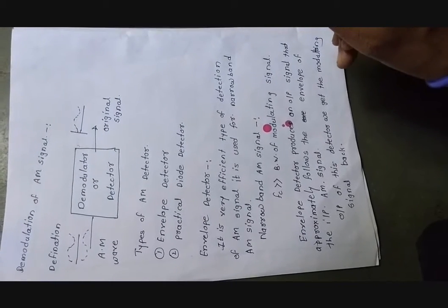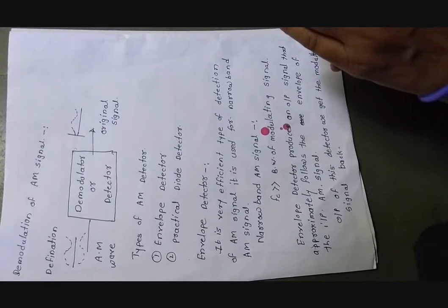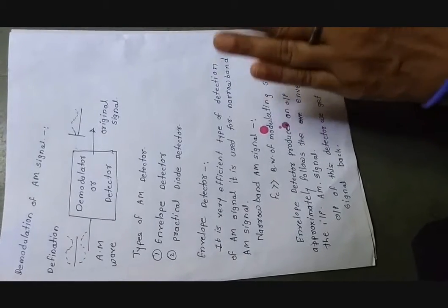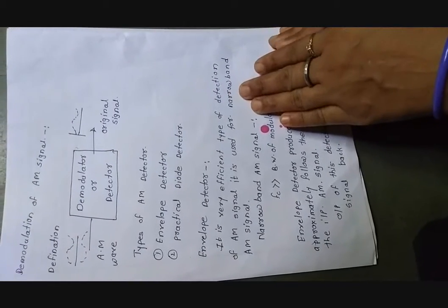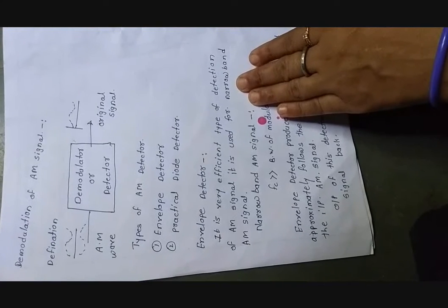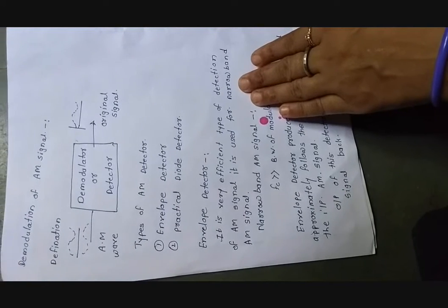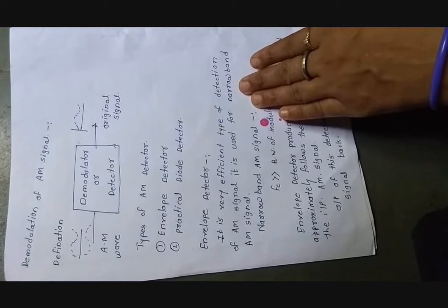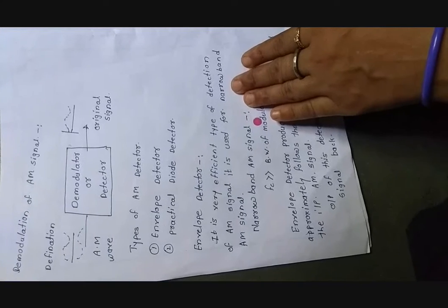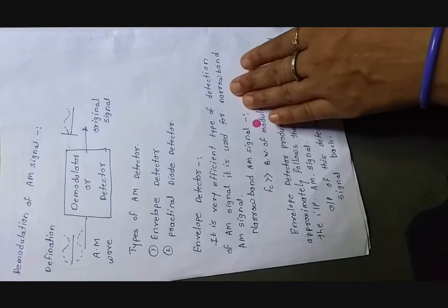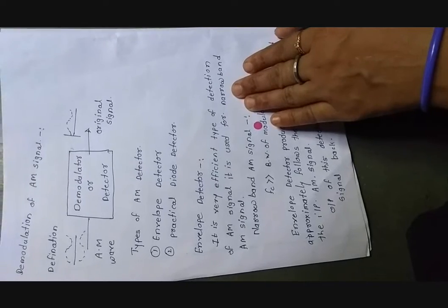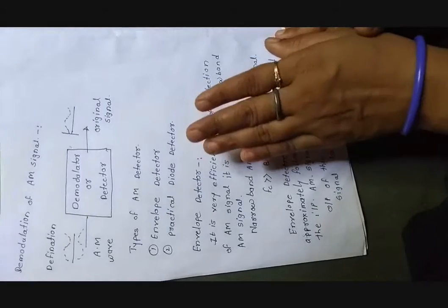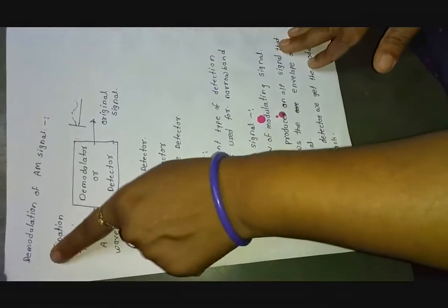What is the meaning of demodulation? Demodulation is a process to get or to retrieve the original signal from the modulated signal. Modulation means the conversion of the modulating signal — changing the parameter of the carrier signal according to the modulating signal, which introduces the modulated signal. To retrieve the original signal from that modulated signal is called demodulation.